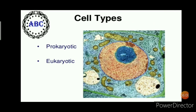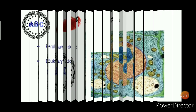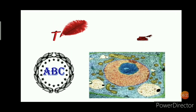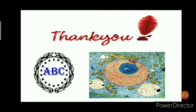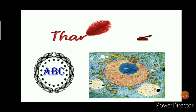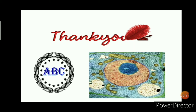Majorly, there are two types of cells: prokaryotic cells and eukaryotic cells. In the next lecture, we will study in detail about prokaryotic and eukaryotic cells. Thank you very much for watching this video.